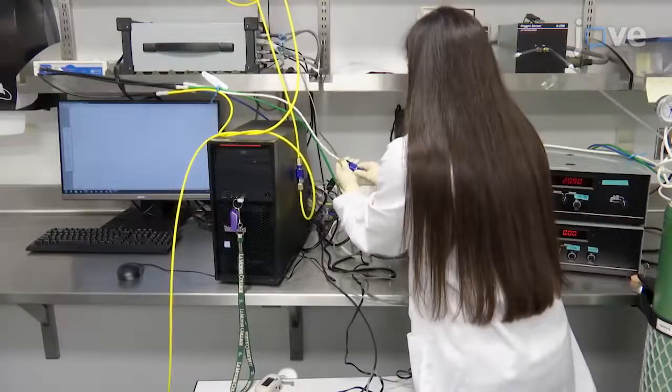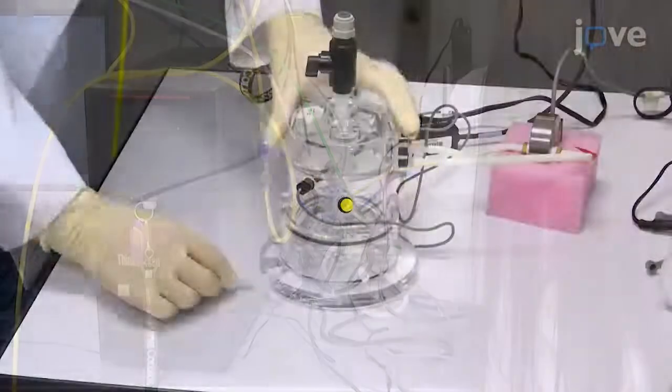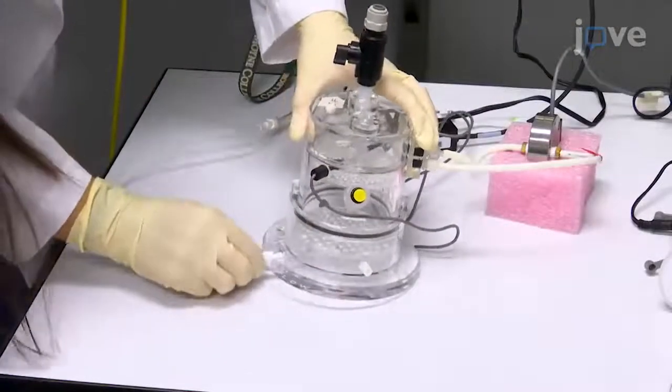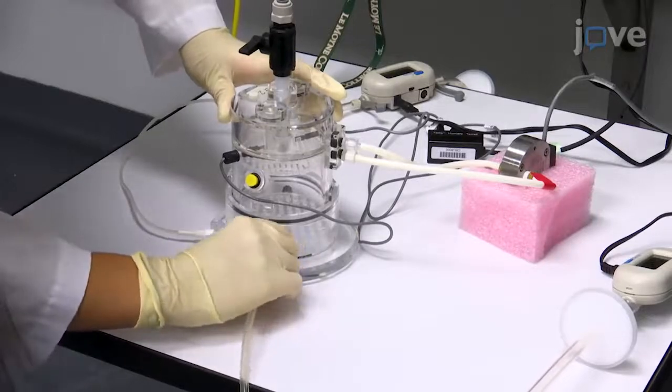Begin by making sure that all of the hoses and tubes are connected to the barometric plethysmograph chamber and by connecting a gas inflow tube and a vacuum outflow tube directly to the barometric plethysmography chamber.